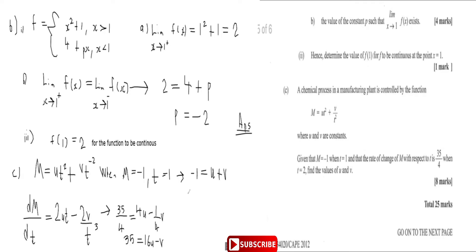Putting the two equations together: u + v = -1 and 16u − v = 35. Adding them: -1 + 35 = 34 = 17u, so u = 2. Substituting back: -1 = 2 + v, so v = -3.